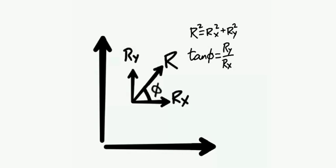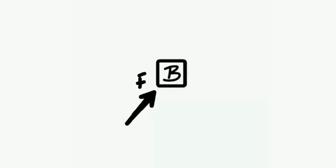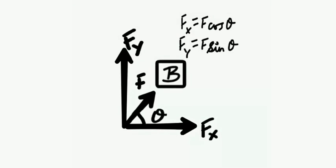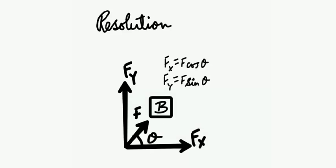Now we take a look at a force F that is not aligned along the horizontal or vertical but is acting at an angle theta to the horizontal. In that case, we find the horizontal component Fx = F cos(theta) and the vertical component Fy = F sin(theta). This is useful for any force acting at a different angle, and this process is called resolution of vectors.